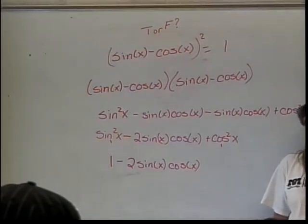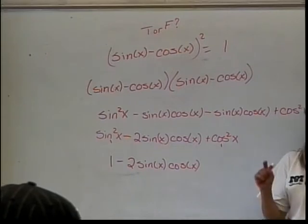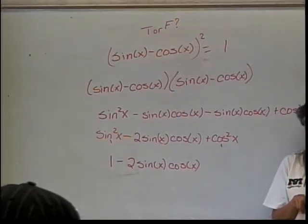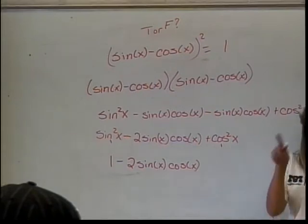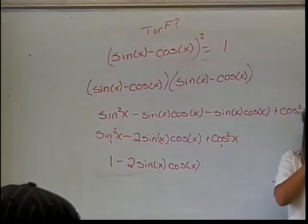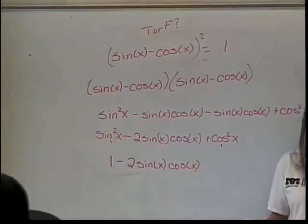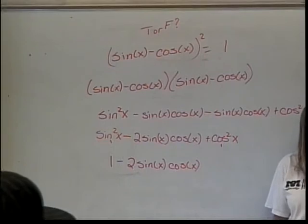Anybody think of 1? By the way, bad choices for this would be 0, pi over 2, pi, and 3 pi over 2. Do you know why those would be bad choices? Because in each one of those cases, one of them is equal to 0. Either the sine of x or the cosine of x is equal to 0, and so that would make that 0. So that would be good choices for finding out if this is not going to work.